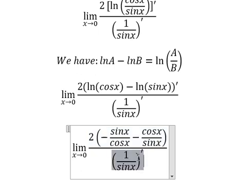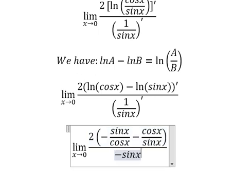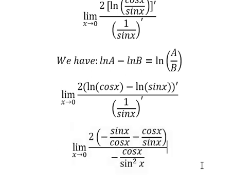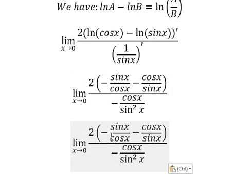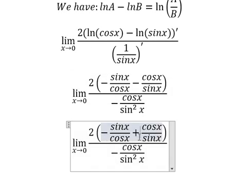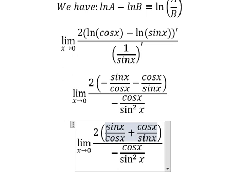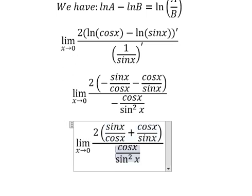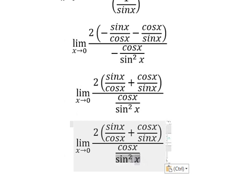So this one is about negative cosine x over sine x squared. And now we need to simplify negative negative. Negative negative. Next I will push sine x in here.